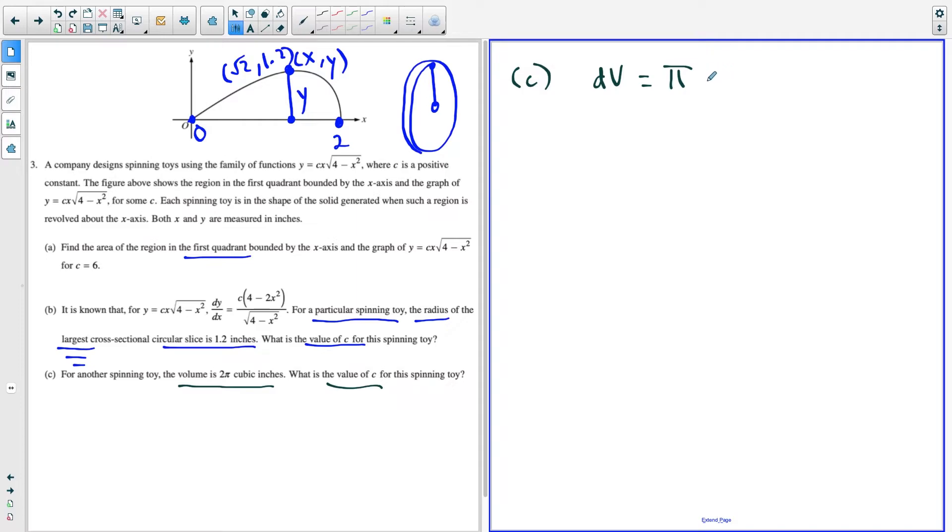But just know the volume of one of those slices is going to be pi times the radius squared. But remember, the radius we could also say is y. So it's going to be pi times y squared. And the thickness of one of these slices is dx, because if we're spinning it around the x-axis, that little change in the horizontal direction here is dx. So we have pi times y squared dx.